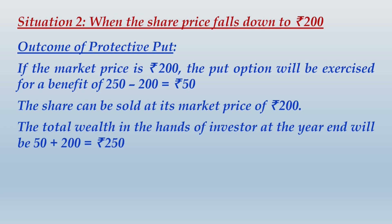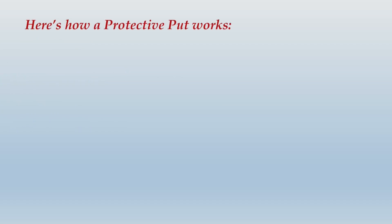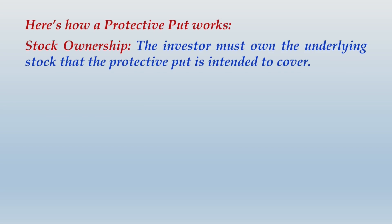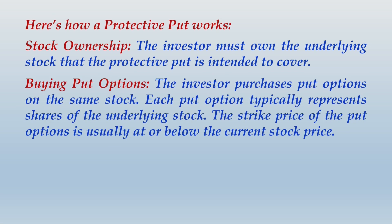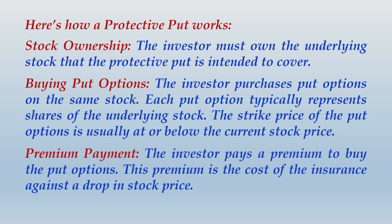Here's how a protective put works. Stock ownership: the investor must own the underlying stock that the protective put is intended to cover. Buying put options: the investor purchases put options on the same stock; each put option typically represents shares of the underlying stock, and the strike price of the put option is usually at or below the current stock price. Premium payment: since you have bought put options, you will have to pay a premium. The investor pays a premium to buy the put options — this premium is the cost of the insurance against a drop in stock price.